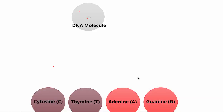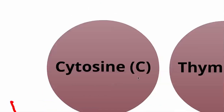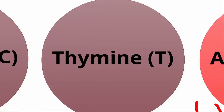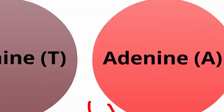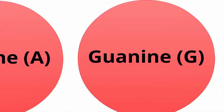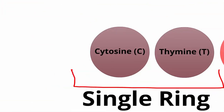The first two are the single-ring bases and the last two are the double-ring bases, so color the first two one color and the second two another color. Cytosine is the first one, represented by a C in DNA. The next one is thymine, symbolized by a T. Adenine is represented by an A, and guanine is represented by a G. Underneath cytosine and thymine, draw a line and write single ring so you can remember that these two bases are the single-ring DNA bases.